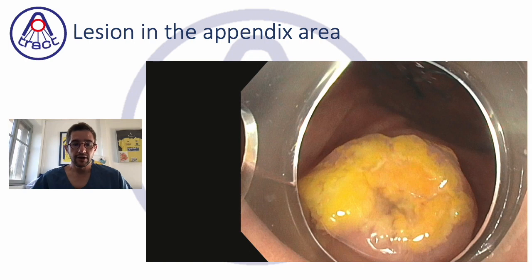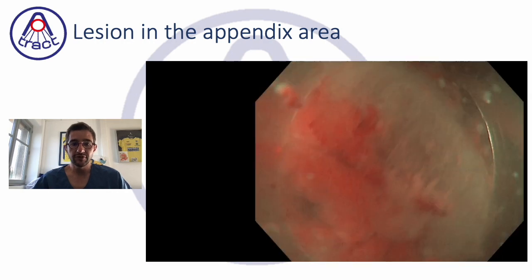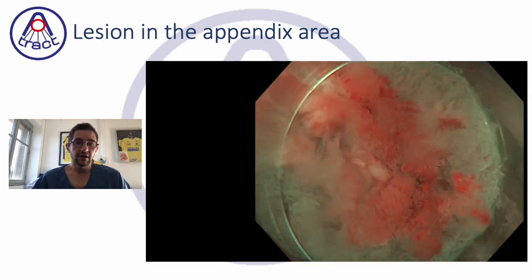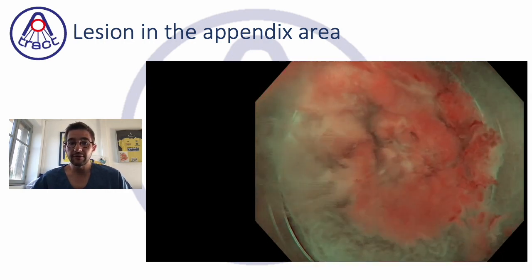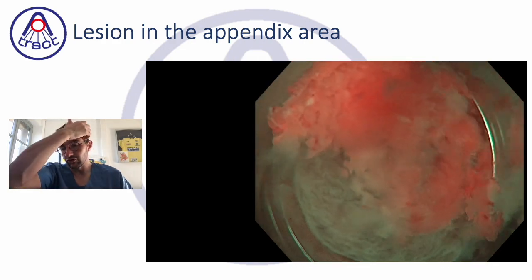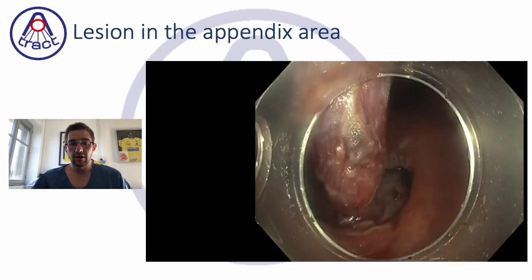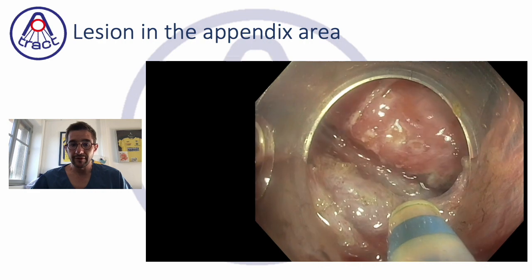So here we present a case of a sessile serrated lesion developed on the appendix, which was a really type 3. I mean, the invasion was not invasion because it's not a concept, but the involvement was completely perpendicular.